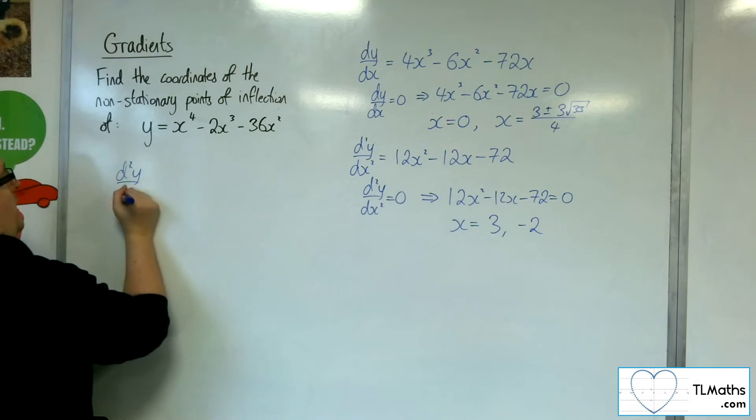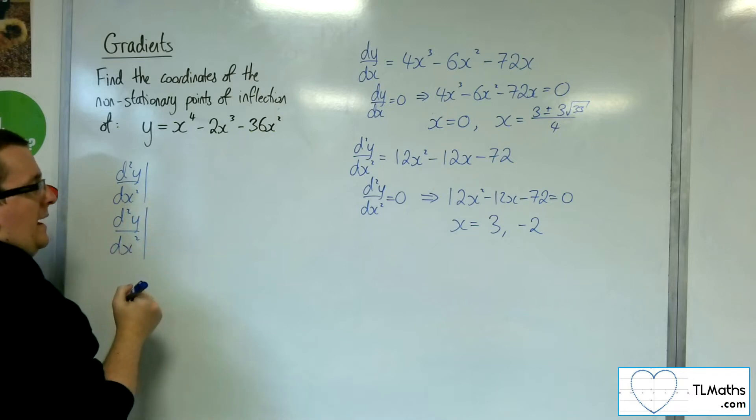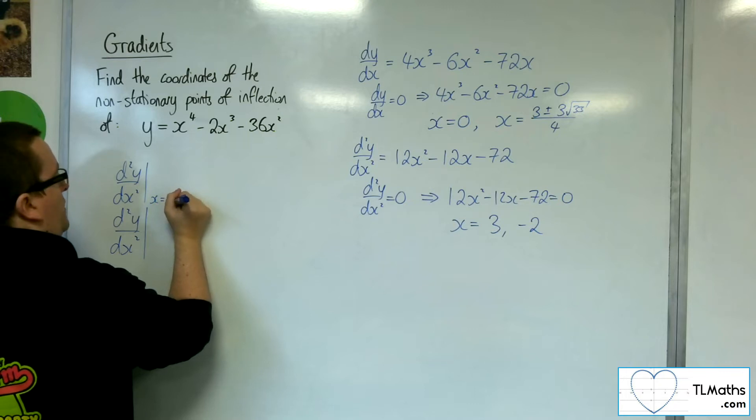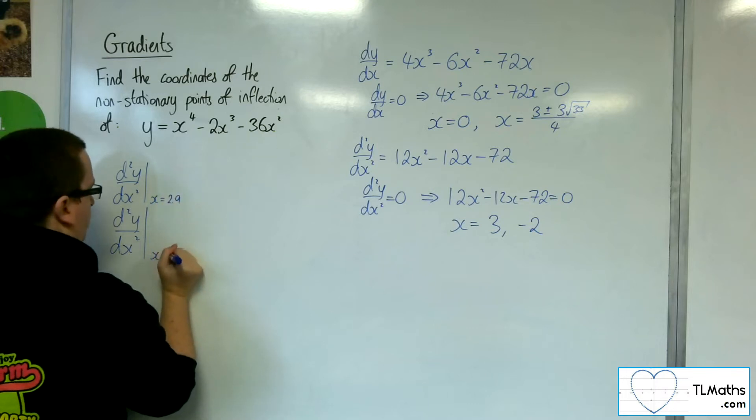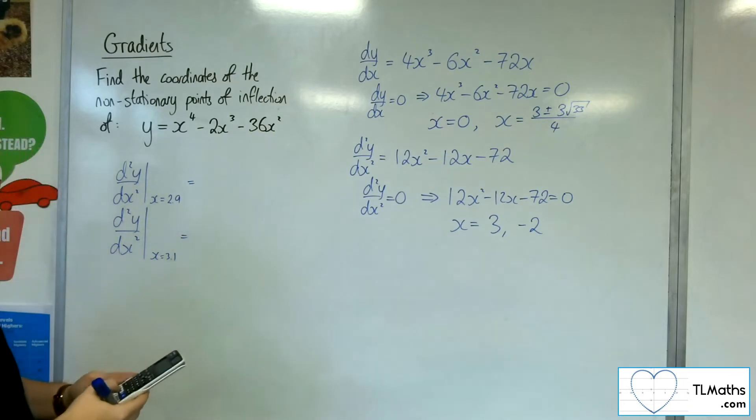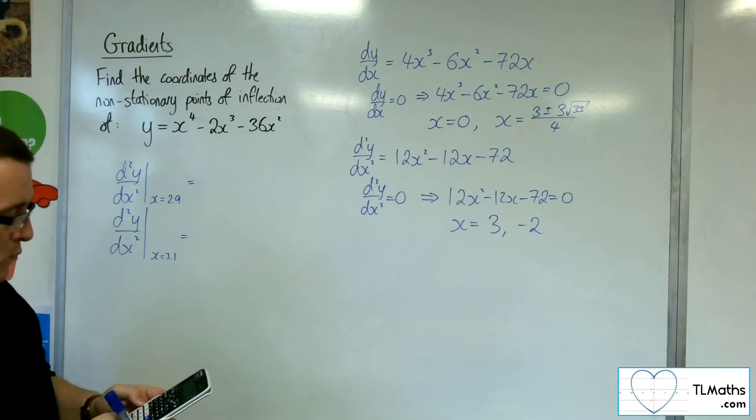So if we check for the second derivative, let's look at x is 3 first. So we're going to check, let's say, 2.9 and 3.1. So we're going to substitute 2.9 and 3.1 to the second derivative and see what we get.